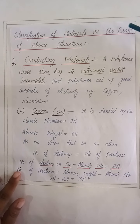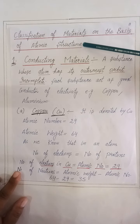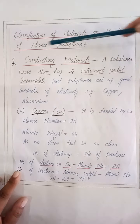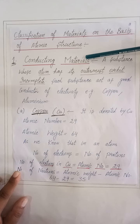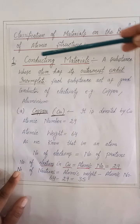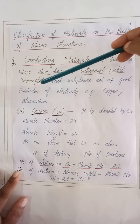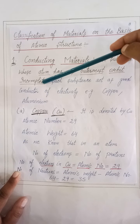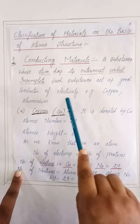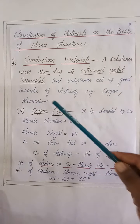Now the classification of materials on the basis of their atomic structure. First, we will classify the conducting materials. A substance whose atom has its outermost orbit incomplete acts as a good conductor of electricity. Examples are copper and aluminium.